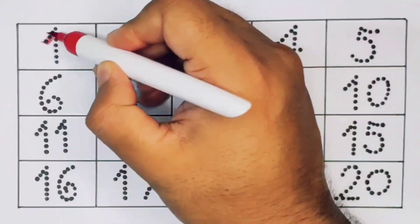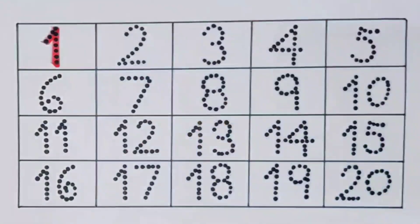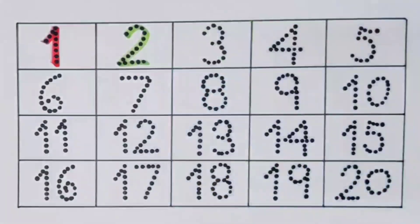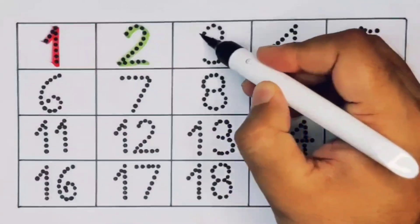First 1. Number 1. Next kids 2. Number 2. Next 3. Number 3.